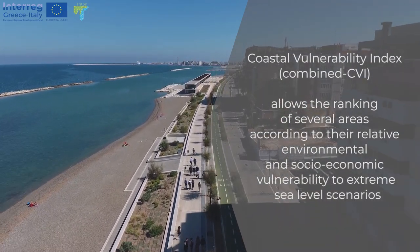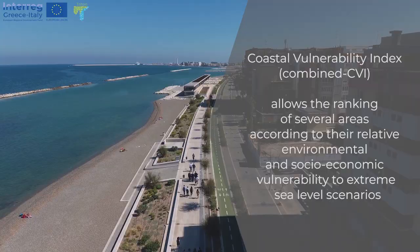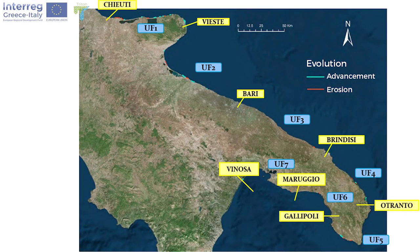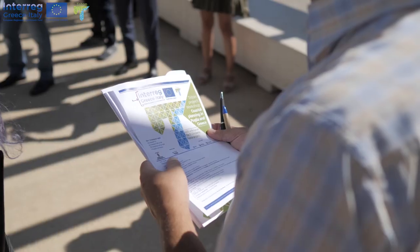From the resulting output shown this morning during the workshop, we can recognise the Apulia region — the Apulian coastline — with a moderate and high vulnerability score, mainly due to high shoreline evolution but also related to the socio-economic system and socio-economic pattern.